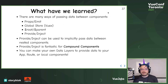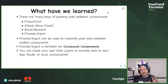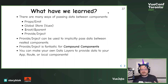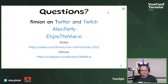So, what have we learned? There are many ways of passing data between components: props and emit, Vuex, $root and $parent, and provide and inject. Provide and inject can be used to implicitly pass data — behind the scenes, components look magical. It's great for compound components where you need something flexible and repeatable. And we can make our own data layers that provide data to an app, a route, or just a local component. Thank you.